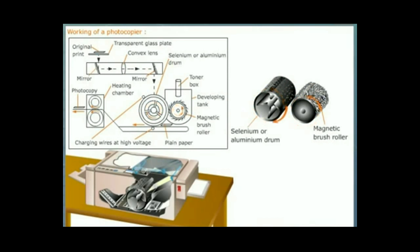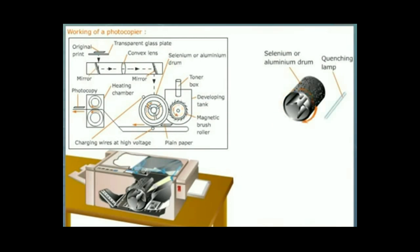Let us now see how this image is transferred to a plain paper. The quenching lamp present near the drum illuminates the drum and dissipates the positive charge on the drum, thereby loosening the toner particles. When positively charged paper comes in contact with the drum, the negatively charged toner particles get attached to the paper. This paper passes through the heating chamber.